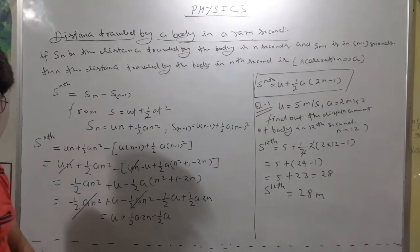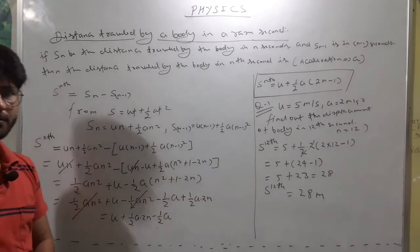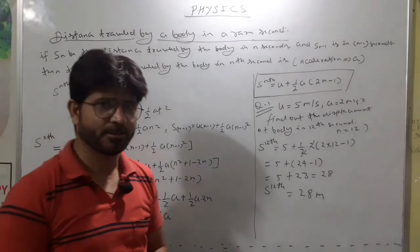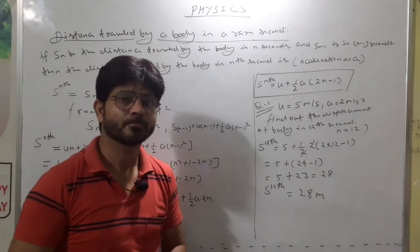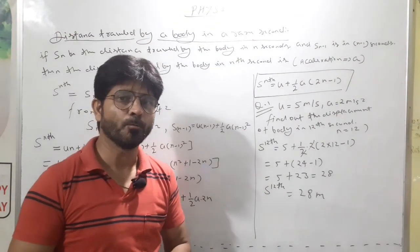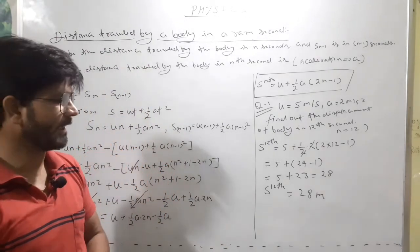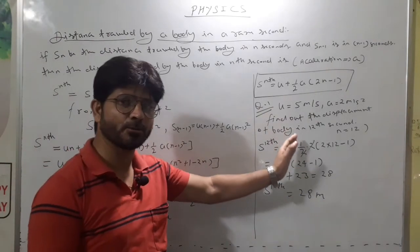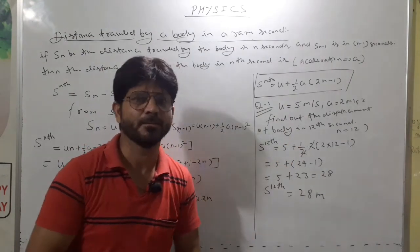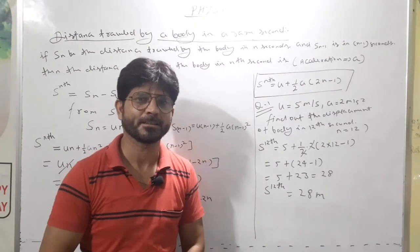This is the particular formula. I hope you understand better now what we have to do to find out the displacement of a body in a particular given second when it is moving with uniform acceleration a. If initial speed is zero, just put u equals 0 — the conditions are the same. We will meet in our next class with a new topic.